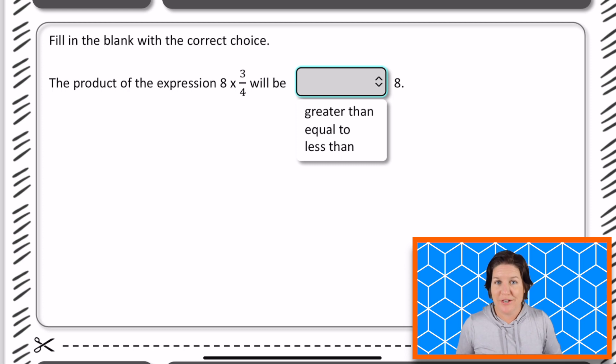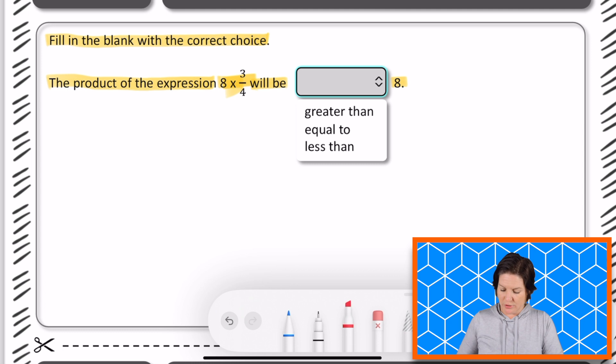Welcome back fifth grade. So this one says to fill in the blank with the correct choice. The product of the expression 8 times 3/4 will be what to 8. And when we click this little drop down menu right here, if this were a computer-based test, we have greater than, equal to, or less than 8.